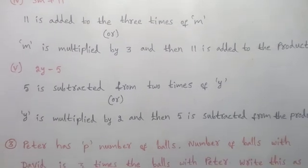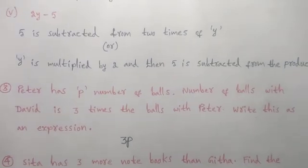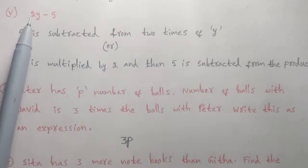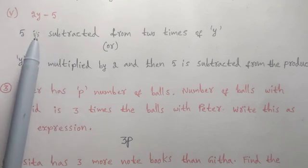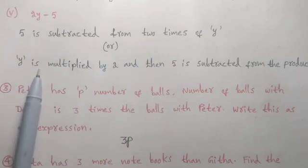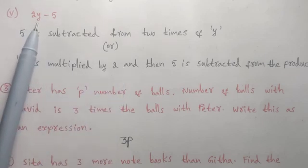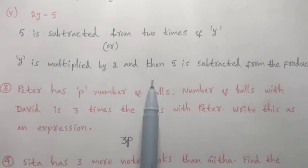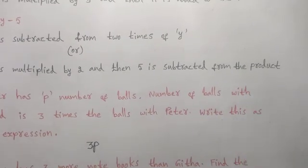Fifth expression: 2 into y minus 5. First sentence: 5 is subtracted from 2 times of y. Second sentence: y is multiplied by 2, and then 5 is subtracted from that product.